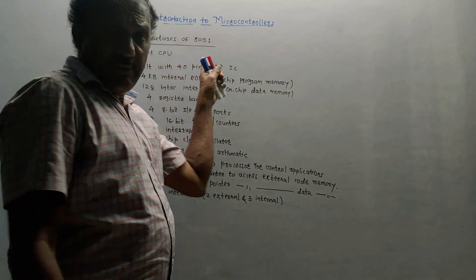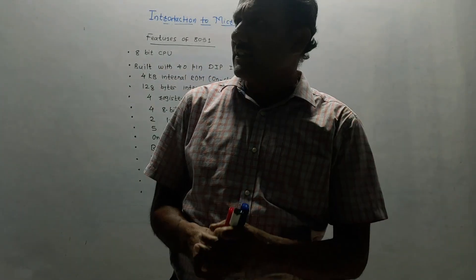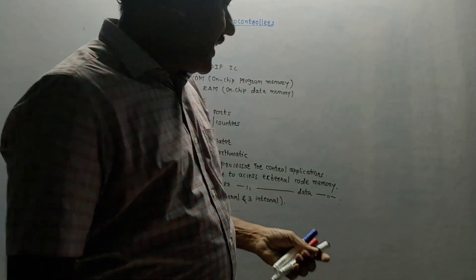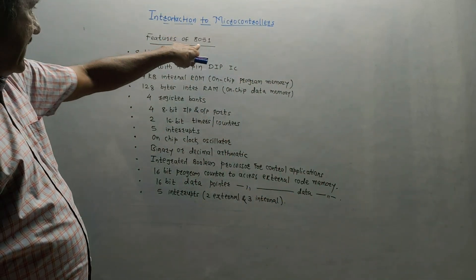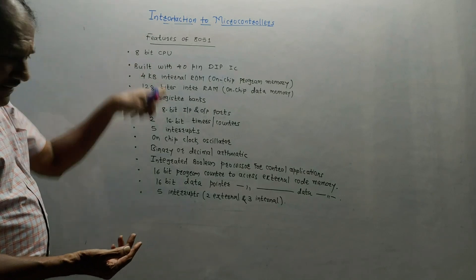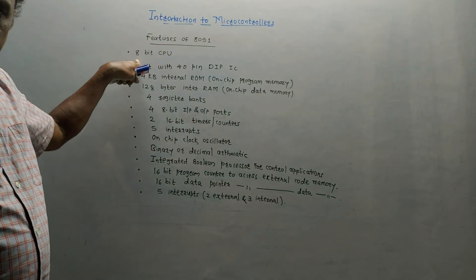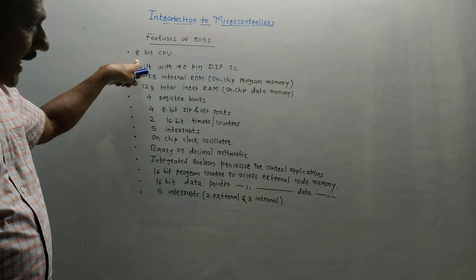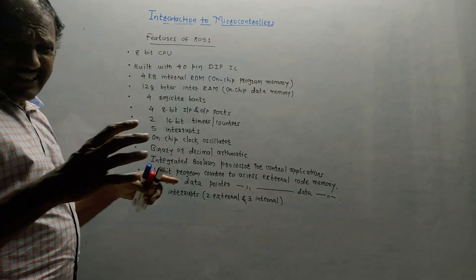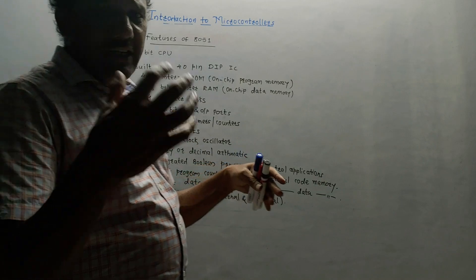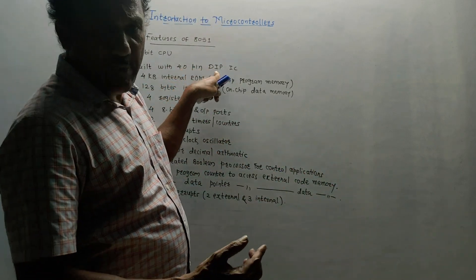Next, we will discuss some important features of the 8051. From the exam point of view, a direct question can be asked: list out the features of microcontroller 8051. First, it has an 8-bit CPU — central processing unit. It is basically a 40-pin IC in DIP, dual-in-package format.